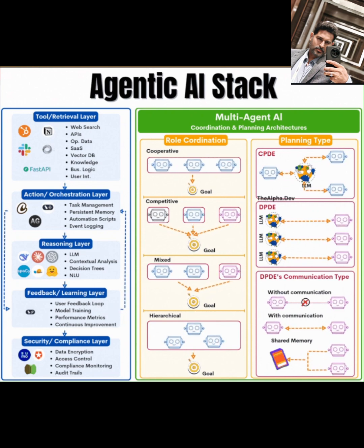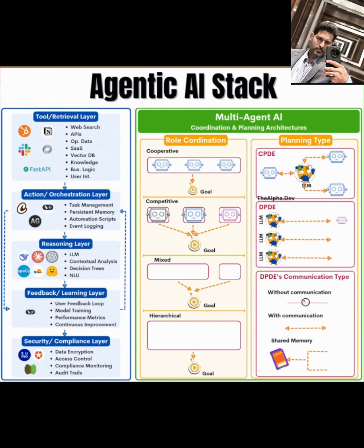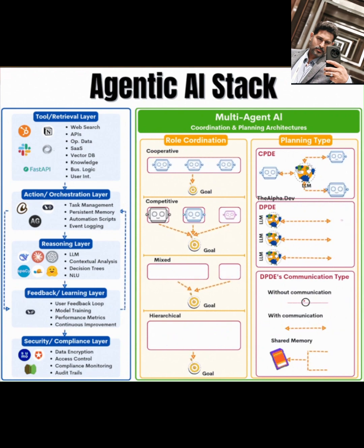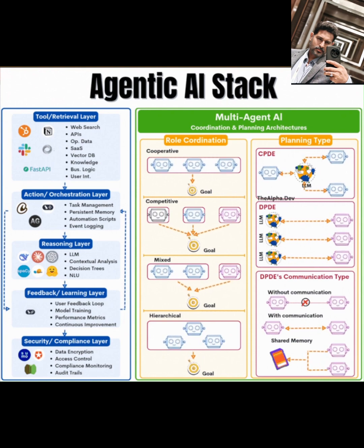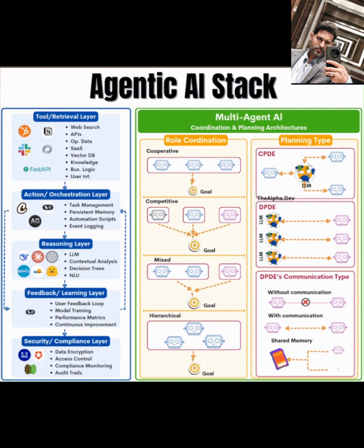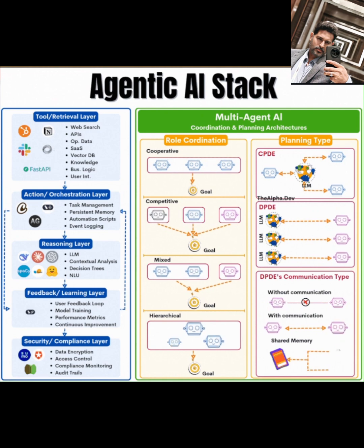Finally, we have the security/compliance layer, which is non-negotiable. Data encryption is a must to protect sensitive information. Implement access control to restrict unauthorized access, and set up compliance monitoring to ensure your system adheres to industry standards like GDPR or HIPAA, depending on your domain. Audit trails provide a record of all actions, ensuring transparency and accountability.